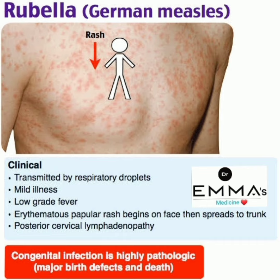Congenital infection is highly pathologic. Remember this red box: congenital infection causes major birth defects and death in rubella, or German measles.